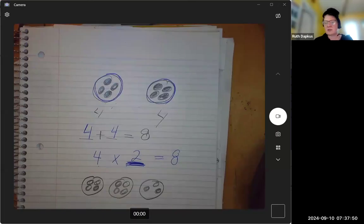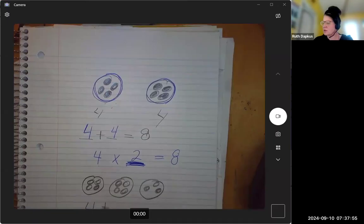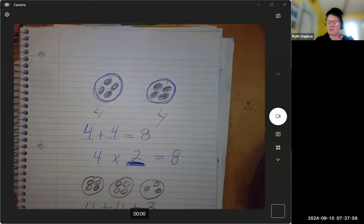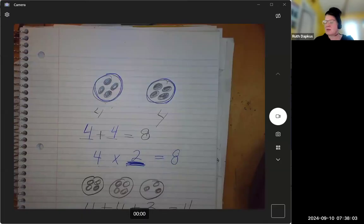We could write an addition sentence, right? We could write four plus four plus three, right, equals eleven. But we couldn't really write three times four equals twelve, right? We'd have to add.